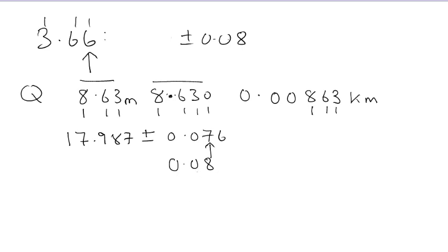There's no point going further than that. Well, if the uncertainty is given to two decimal places, the same must be true of the quantity itself, no point giving that to more accuracy than the uncertainty, so that it becomes 17.99 plus or minus 0.08. That's how you represent it. One figure.